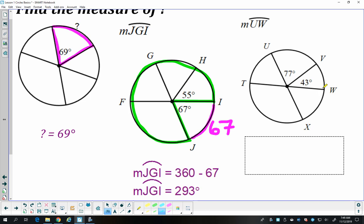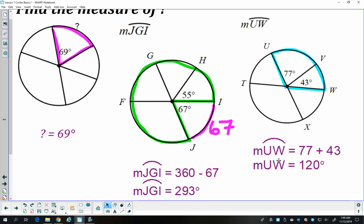And then, UW is right here, formed by that angle. So I just add these two together, and I get 120 degrees.